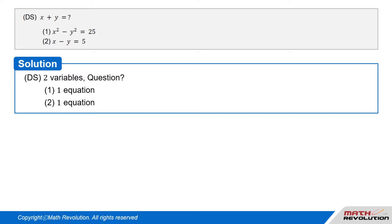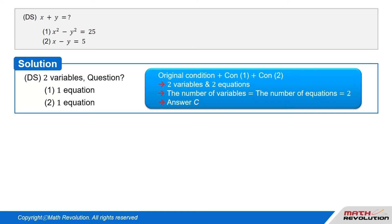Let the original condition in a DS question contain two variables. Two variables would generally require two equations to find the value of the variables. We are aware that each condition would usually give us an equation, resulting in a total of two equations — one each from Condition 1 and Condition 2. Since we need two equations to match the number of variables, an equal number of equations and variables should logically give us the answer C.